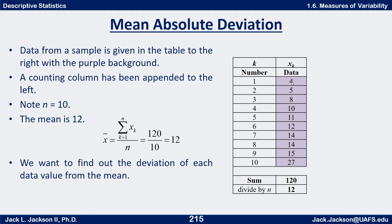Take the X sub k's and subtract X bar. I'll do the first one: 4 minus 12 is negative 8, indicating that 4 is 8 units below the mean. The last one: 27 minus 12 is 15, so that's 15 units above the mean. Then add up all those deviations and see what happens. Press pause now.